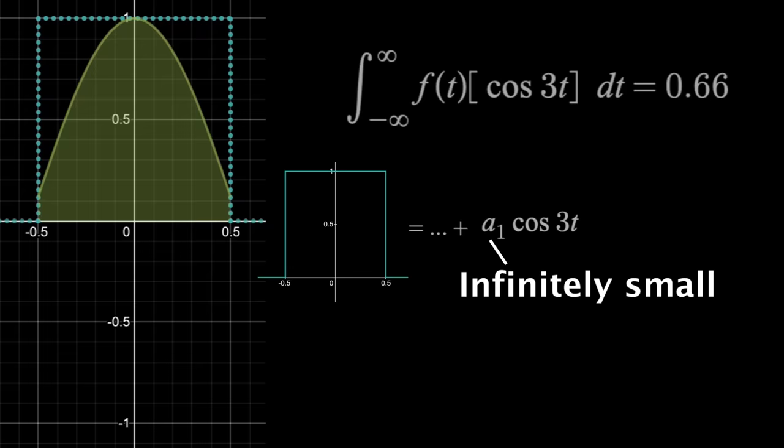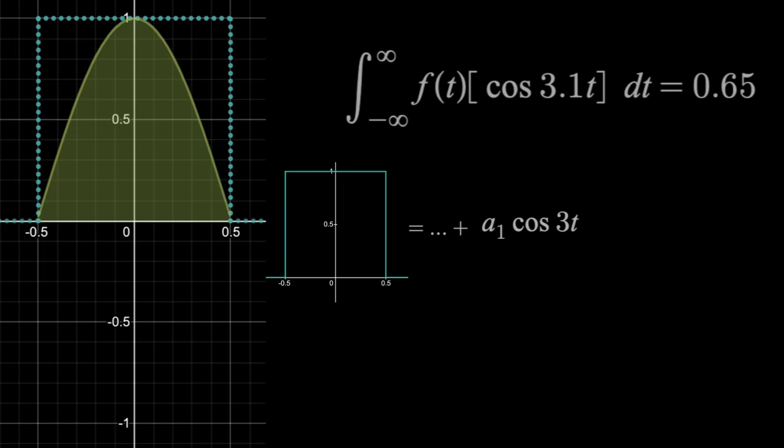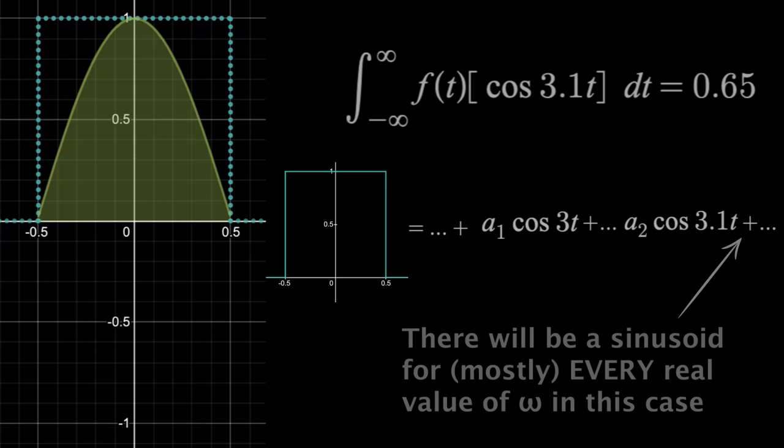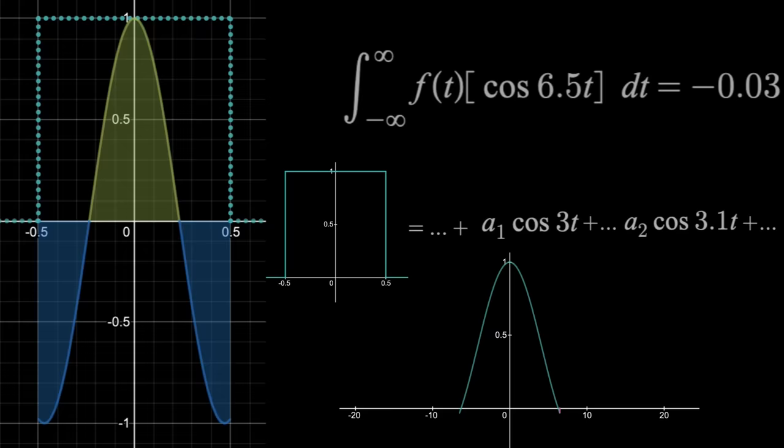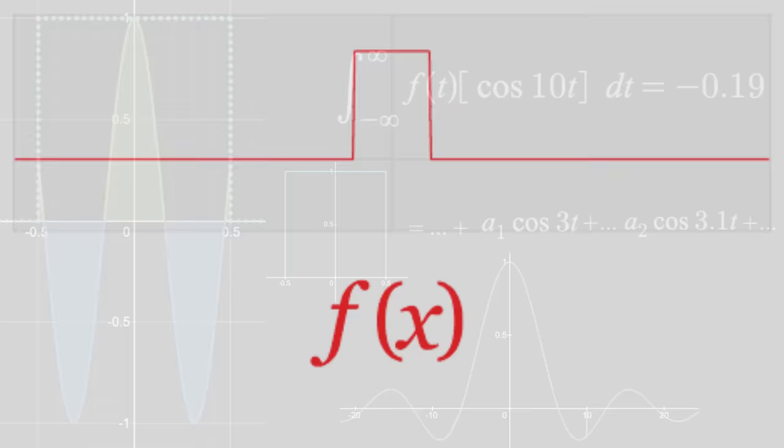If we increase omega to 3.1, we still get a non-zero finite area, which means there's also a cosine of 3.1 t in our function with an infinitely small amplitude. This will be the case for pretty much every real number though, meaning we have to sum up an infinite number, a continuous spectrum of infinitely small sinusoids to make the rectangular function. And when it comes to the visual intuition, instead of spikes, we show an actual continuous spectrum of values representing all the sinusoids that make up our signal. And this animation I've shown before highlights how that sum can create a real finite function.